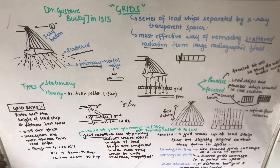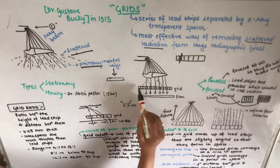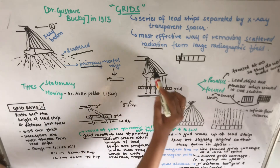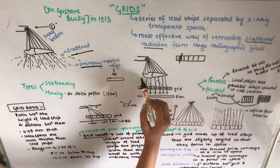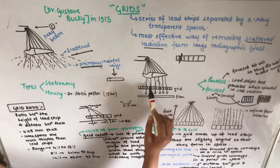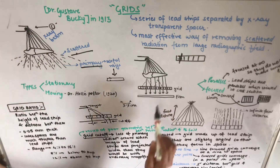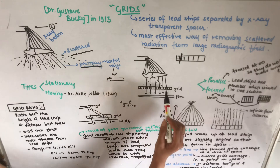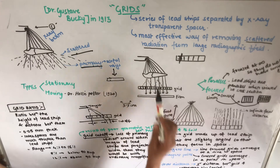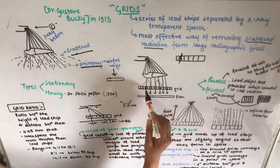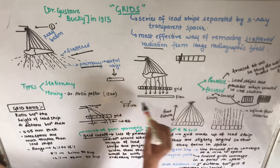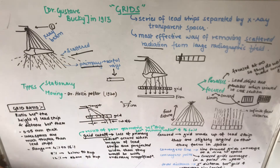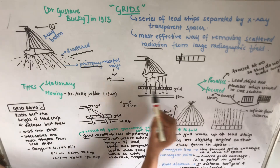This grid was given by Dr. Gatshev Bucky in 1913. It is placed between the object and the film. When the x-ray beam hits the object, scattered and primary radiations are produced. The lead strips in the grid absorb the scattered radiation, so only the primary radiation reaches the film, improving image quality.